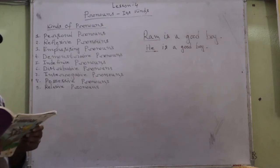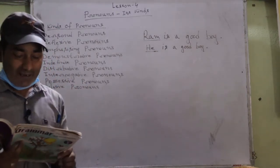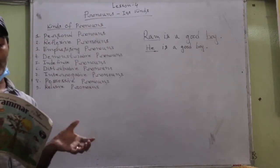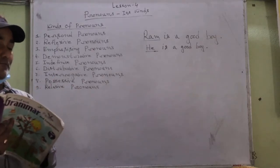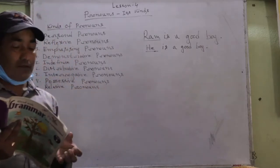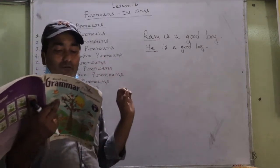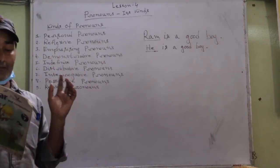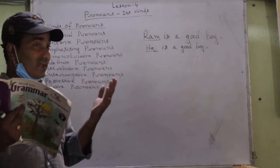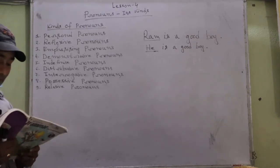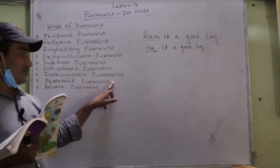Next we learn about distributive pronouns. Distributive pronouns are used to refer to persons or things one at a time. When you want to refer to a number of persons or things individually, such words are called distributive pronouns. For example: 'Each of the boys was given a prize.' Here 'each' refers to individual boys. Words like 'each,' 'either,' and 'neither' are examples of distributive pronouns.